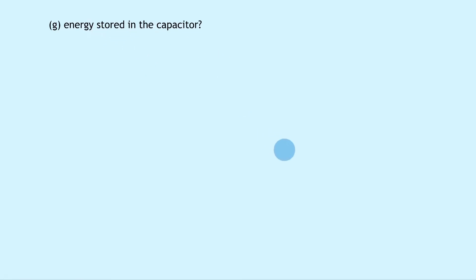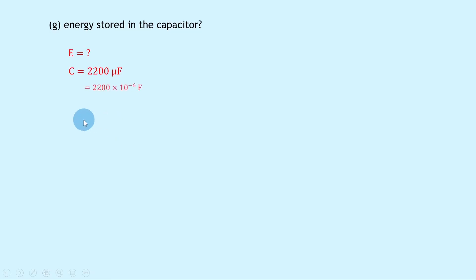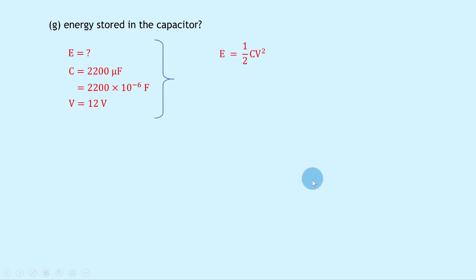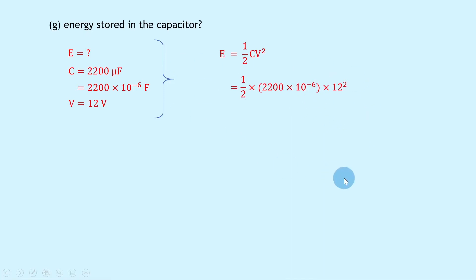Part G says when the capacitor is fully charged, what is the energy stored? We're trying to find the energy E. We know capacitance C is 2200 microfarads, or 2200×10⁻⁶ farads, and the potential difference V is 12 volts. Using the equation E equals half CV squared, substituting in gives half times 2200×10⁻⁶ times 12 squared, and putting that into your calculator gives a final answer of 0.16 joules.